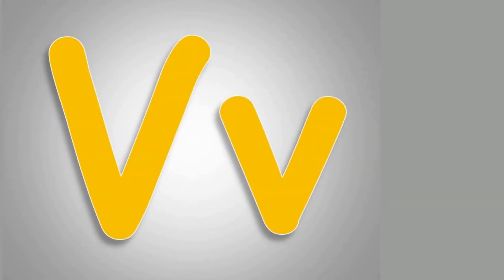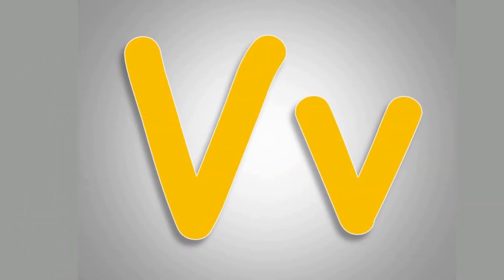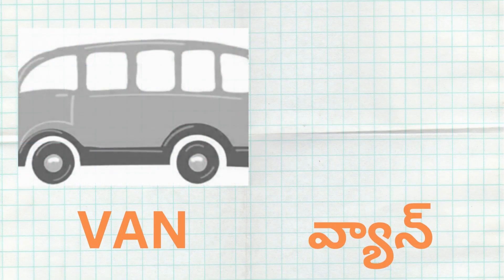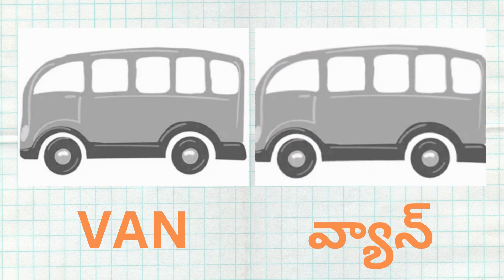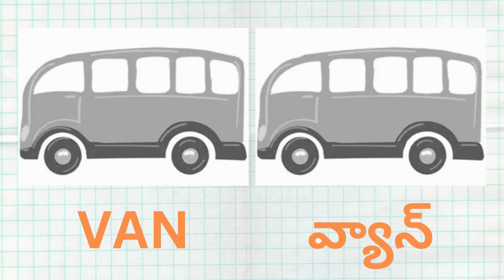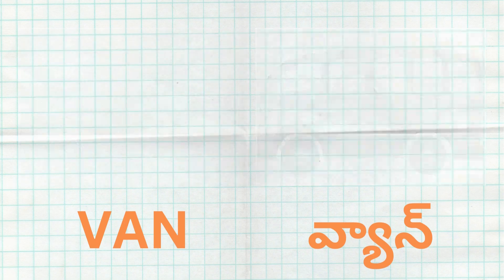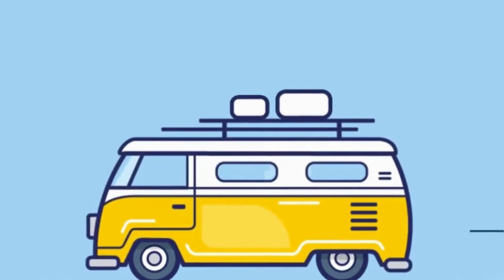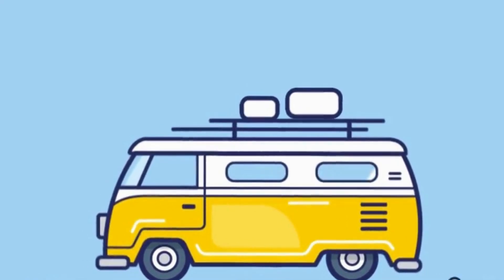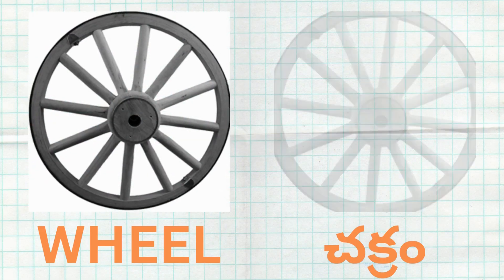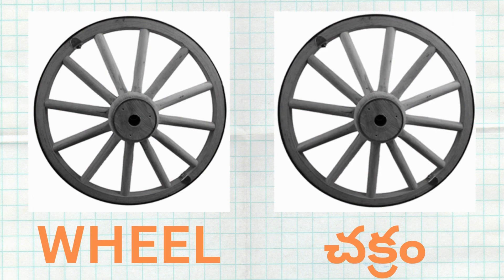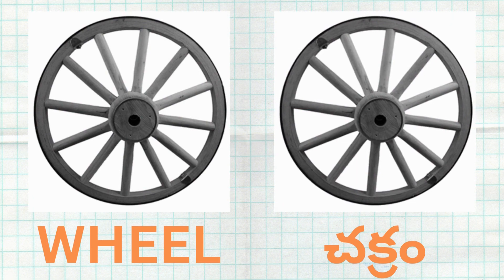U for Umbrella. Umbrella Ante Godugu. V for Wheel. Wheel Ante Chakram.